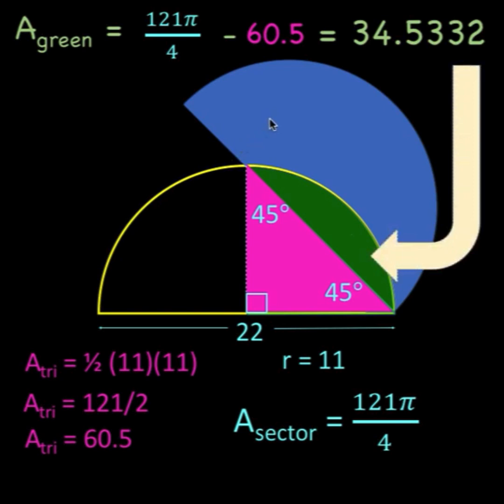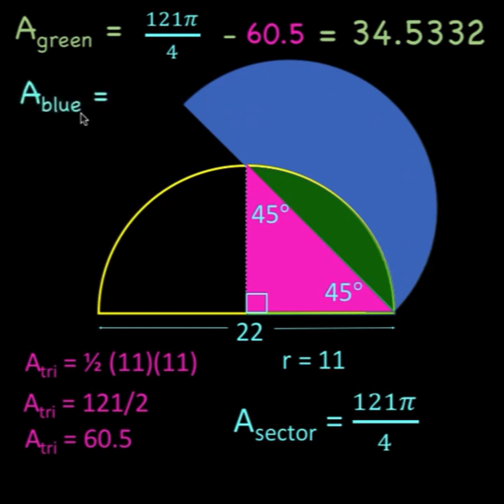Our goal is to find the area of this blue shaded region. And from the figure, it is clear that we can find the area of this blue shaded region by subtracting the area of this blue semicircle and the area of this green shaded region.